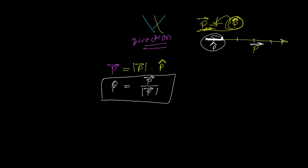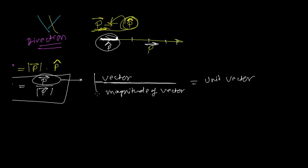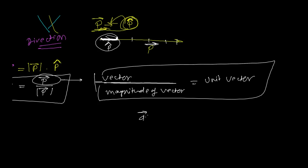To find the unit vector of any vector, simply write the vector divided by its magnitude. So vector divided by the magnitude of the vector gives the unit vector. For vector a, the unit vector a-cap equals vector a divided by the magnitude of a, sometimes written simply as |a| or just 'a' symbolically.